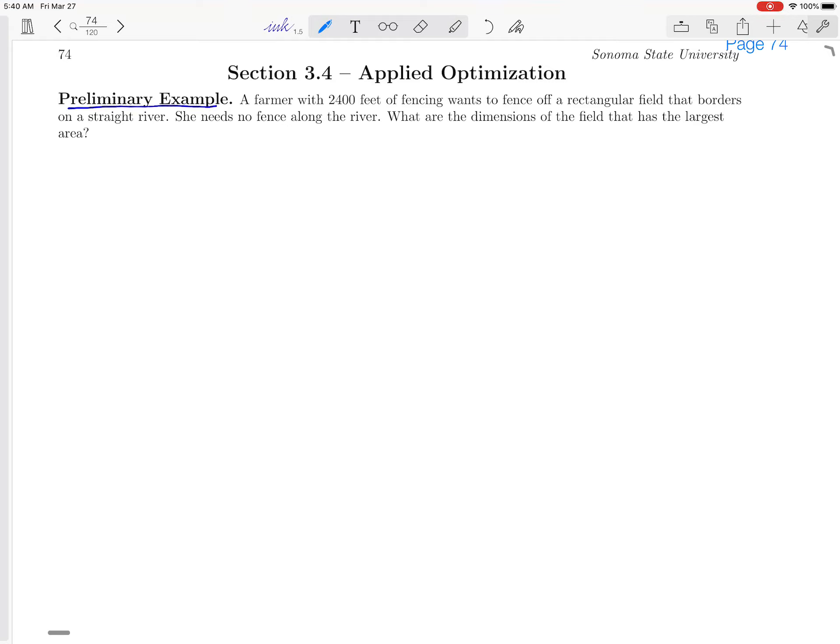I think the best way to illustrate this concept is just with an example. So let's take a look at the preliminary example here and read this problem together. A farmer with 2,400 feet of fencing wants to fence off a rectangular field that borders on a straight river. She needs no fence along the river, and they'd like to know what are the dimensions of the field that has the largest area.